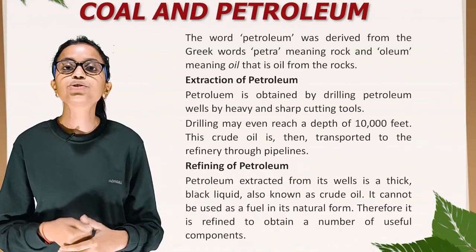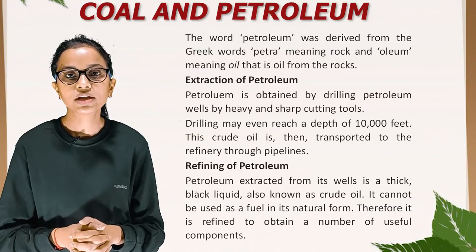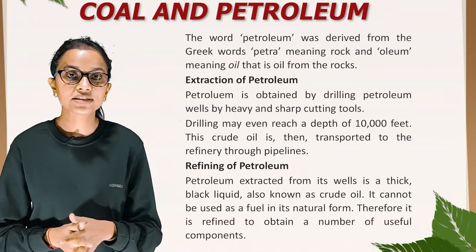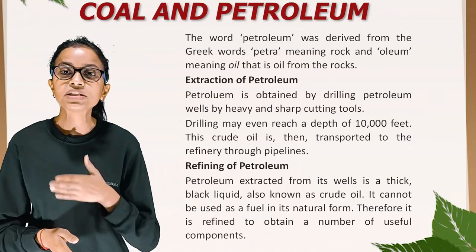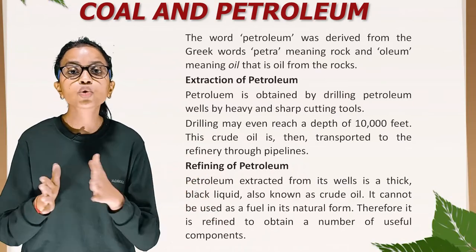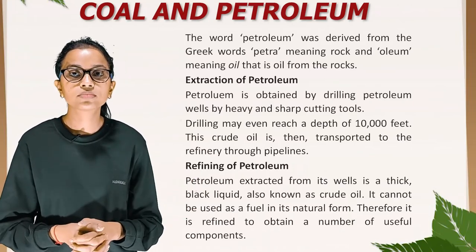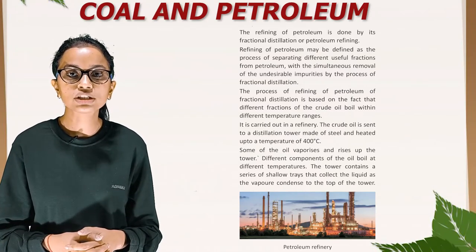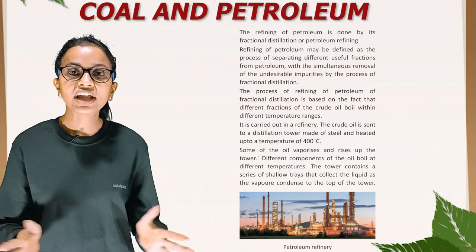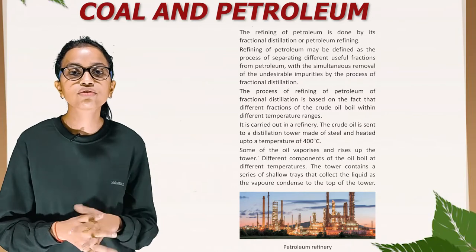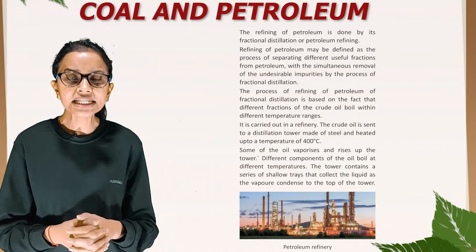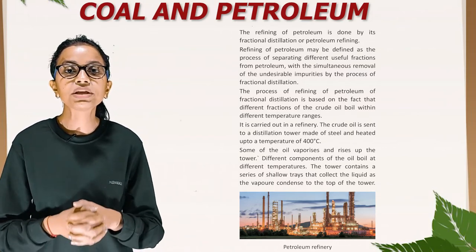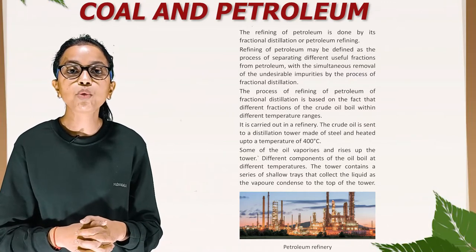Extraction of petroleum: Petroleum is obtained by drilling petroleum wells using heavy and sharp cutting tools. Drilling may even reach a depth of 10,000 feet. This crude oil is then transported to the refinery through pipelines. Refining of petroleum: Petroleum extracted from its well is a thick black liquid also known as crude oil. It cannot be used as a fuel in its natural form; therefore, it is refined to obtain a number of useful components. The refining of petroleum is done by fractional distillation. Different fractions of the crude oil boil within different temperature ranges.